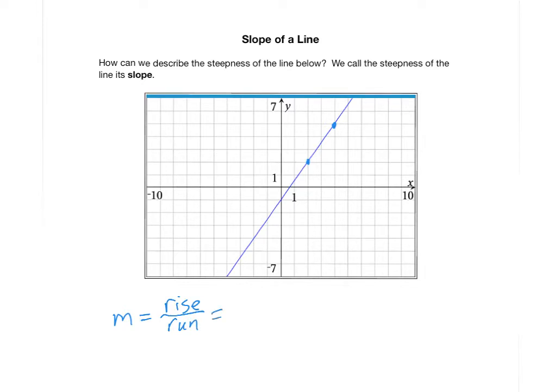Or the change in y over the change in x. Because we're talking about first a vertical distance, that's the change in y between these two points, and then a horizontal distance is the change in x of these two points. Another way that people write the word change in mathematics is with the Greek letter delta, which looks like a triangle. So this slope is also written as delta y over delta x.